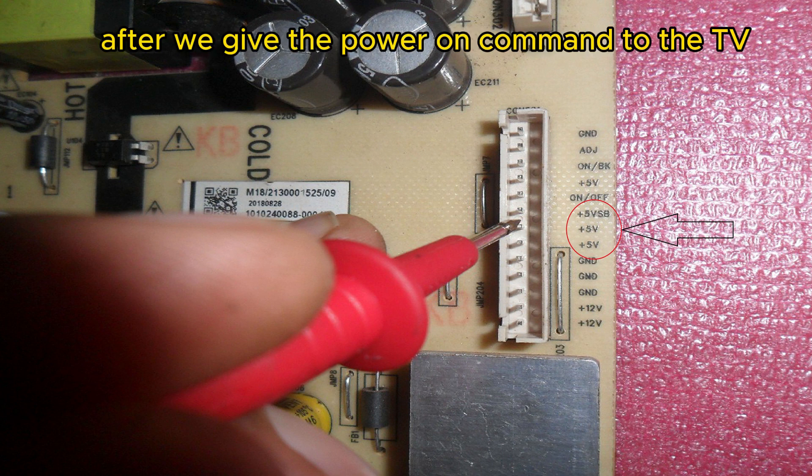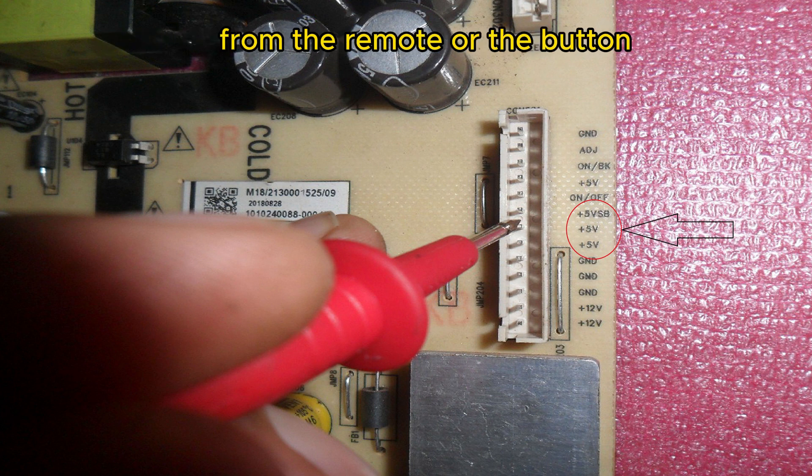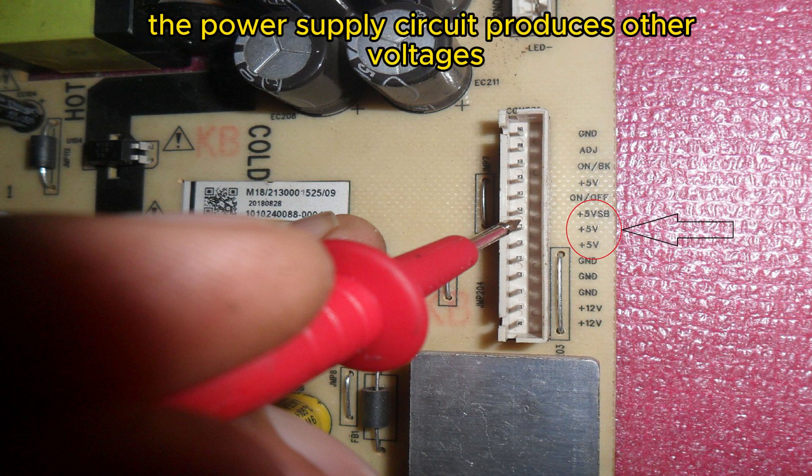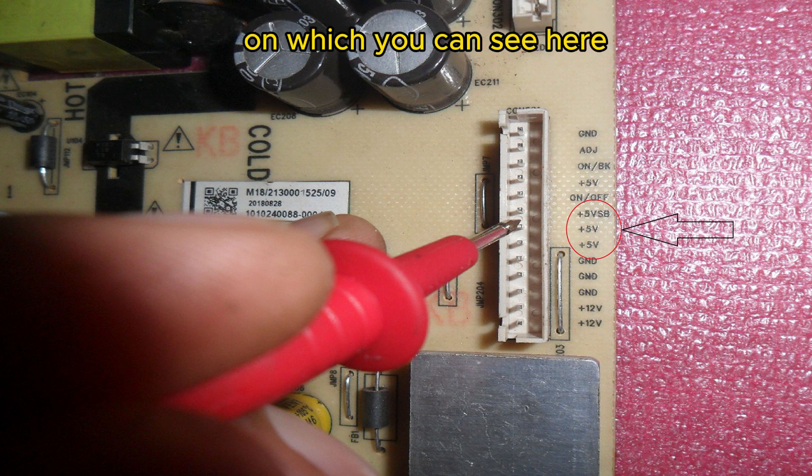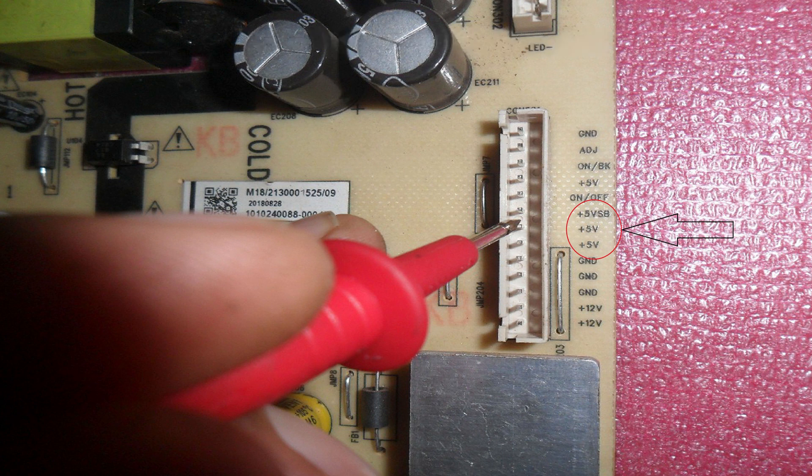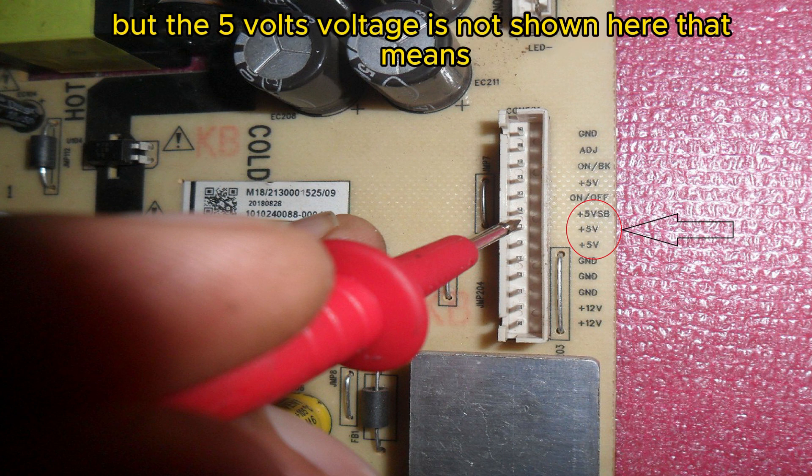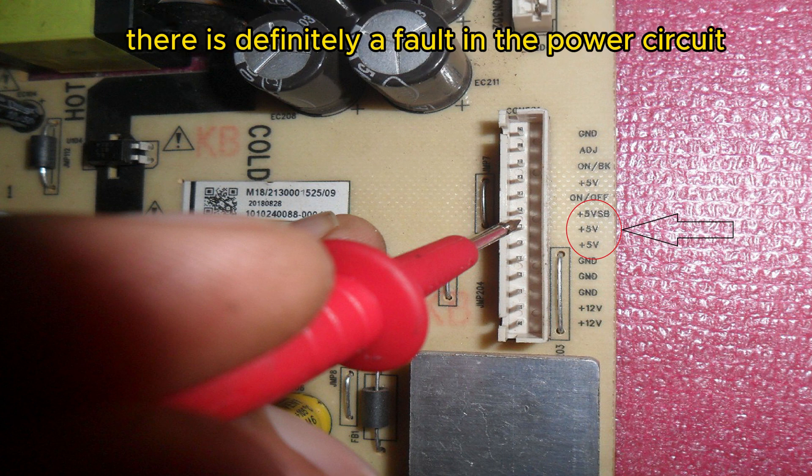After we give the power on command to the TV from the remote or the button, the power supply circuit produces other voltages after receiving a return voltage from the motherboard to the pin marked as P on which you can see here. But the 5 volts voltage is not shown here. That means there is definitely a fault in the power circuit here.